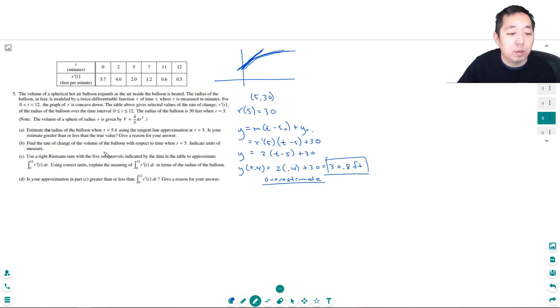Find the rate of change of the volume of the balloon with respect to time when t equals 5. Indicate units of measure. So v equals 4/3 pi r cubed, and I want to know what dv/dt is. I'm taking the derivative: 4/3 pi times 3r squared times dr/dt.